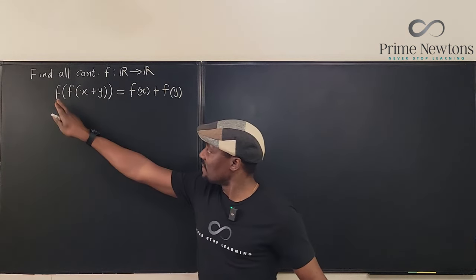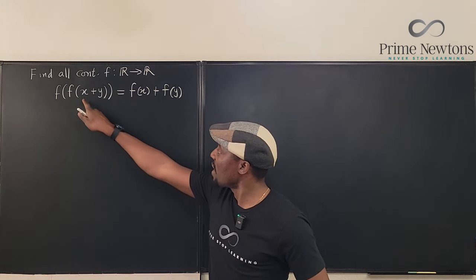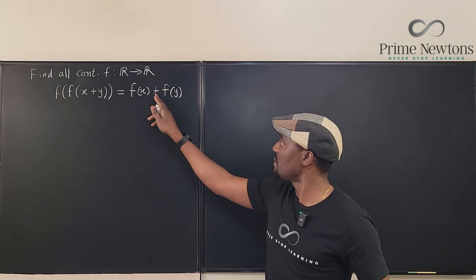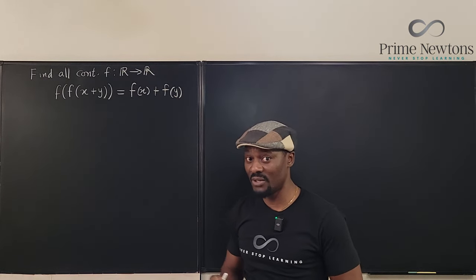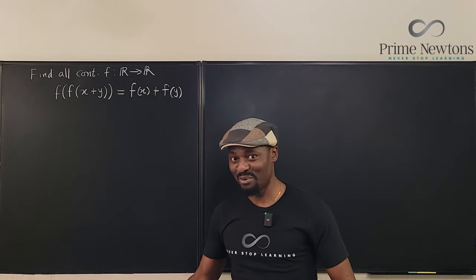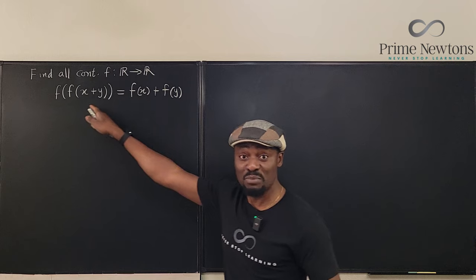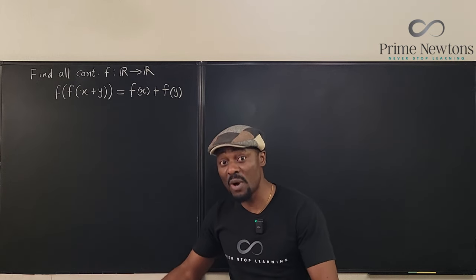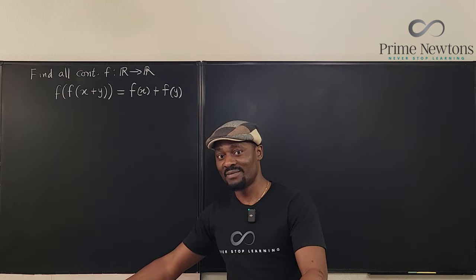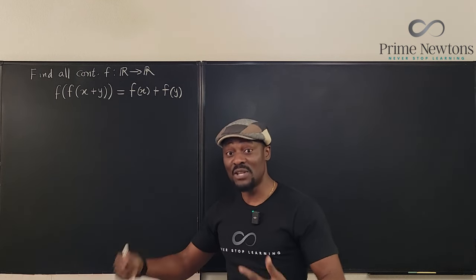We have the composition of f with itself, such that you have x plus y as the argument, and it splits into f of x plus f of y after the second composition. Now that second composition is the problem, because if there was no second composition, this would be what you call a Cauchy functional equation, which we already know what the solution will be. I'm going to talk about that as the video progresses.